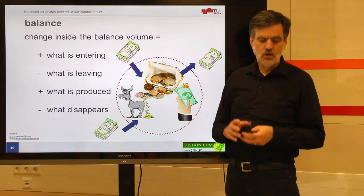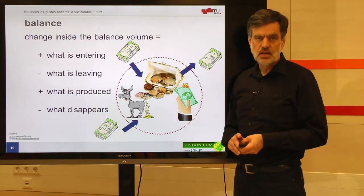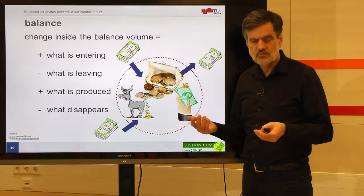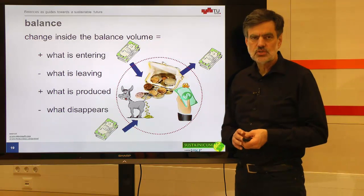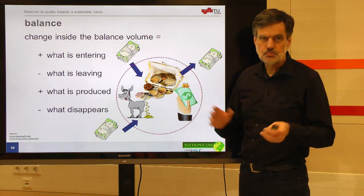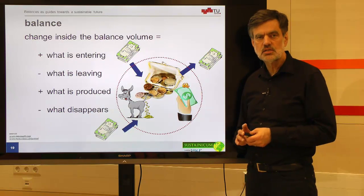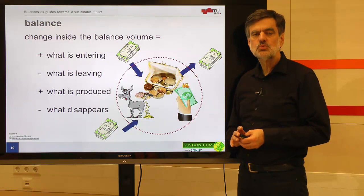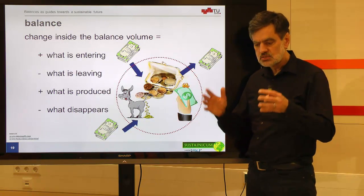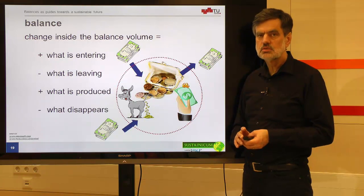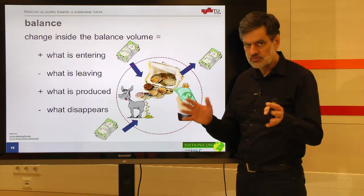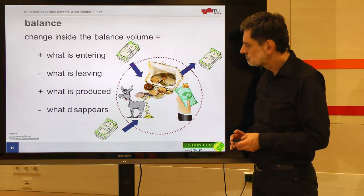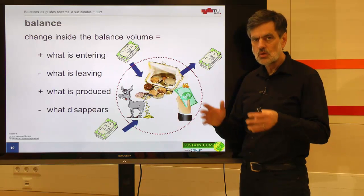For some properties, balances must be fulfilled exactly, because otherwise the world would behave completely differently. This applies especially to energy and mass — the only exception being Einstein's famous equation E = mc², which describes an interrelation between energy and mass. But mass and energy together are conserved, even accounting for this equation.